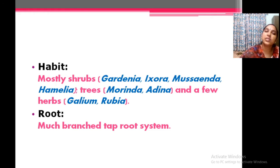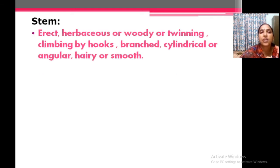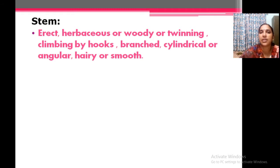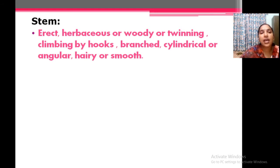The root is a dichotomously branched tap root system. The stem of these members is erect, woody, herbaceous, twining, or climbing. Some may climb by hooks, but usually they are herbaceous forms. The stem is branched or cylindrical, hairy, or in some cases usually smooth.